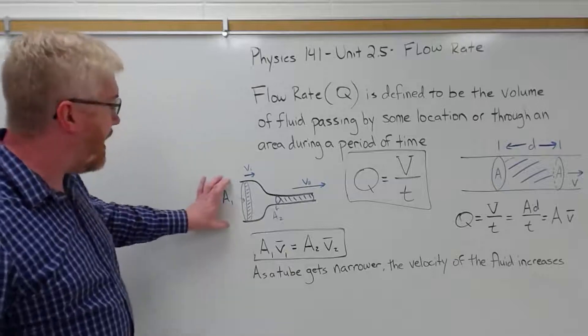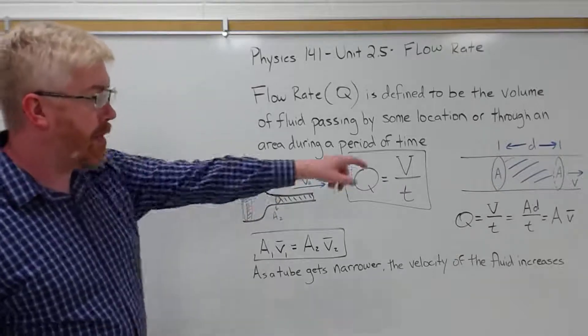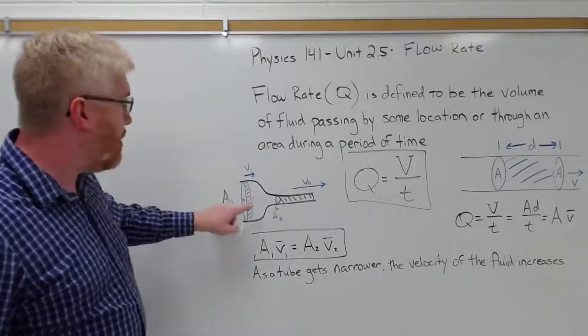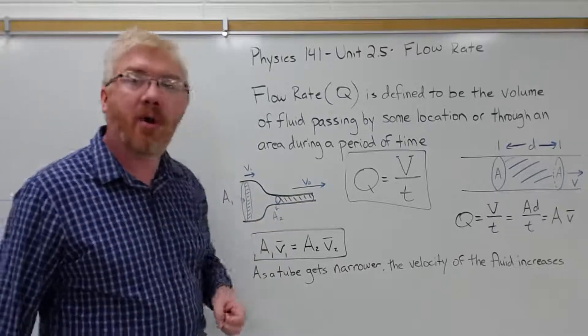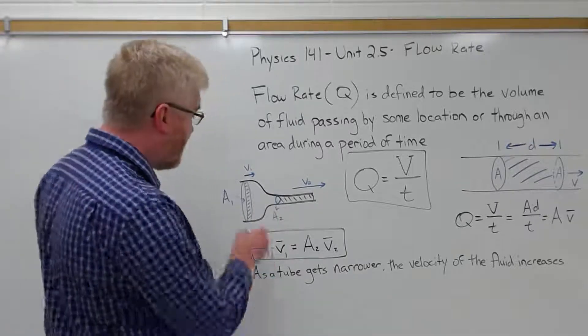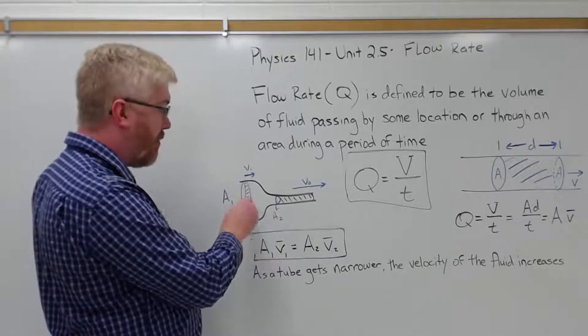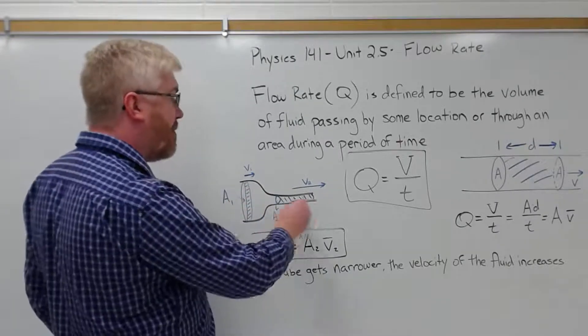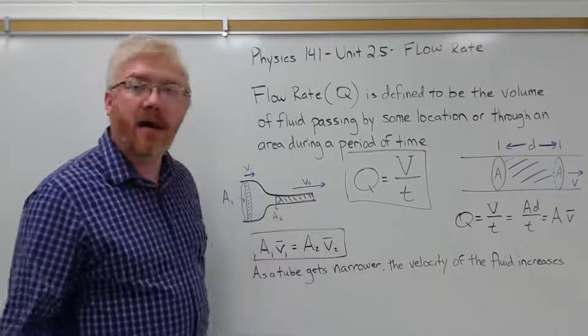So the volume flow rate has to remain the same for a given closed system. So what happens if you take the large tube, like the one we have over here, and narrow it down into a smaller opening? Well, the volume flow rate has to remain the same.